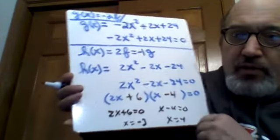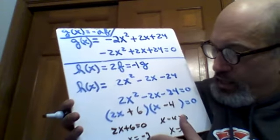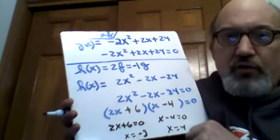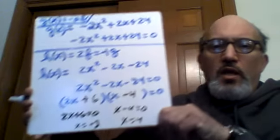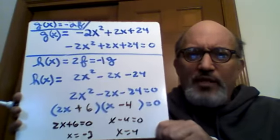Now, setting each of these factors equal to 0 and solving, we get x equals negative 3 and x equals 4, right? If 2x plus 6 is equal to 0, subtract 6 from each side, divide by 2, get negative 3. If x minus 4 is 0, of course, x is 4.